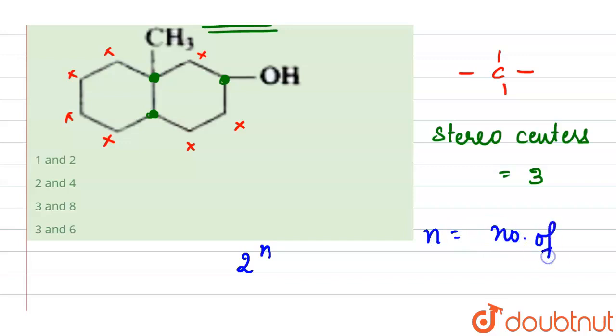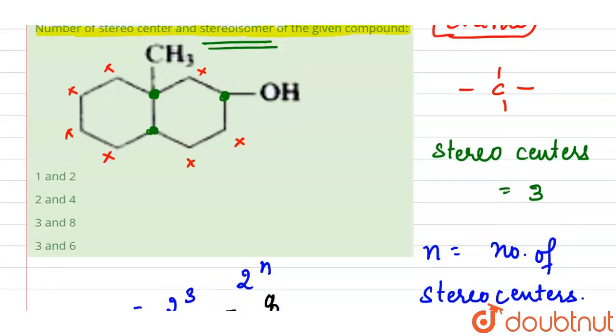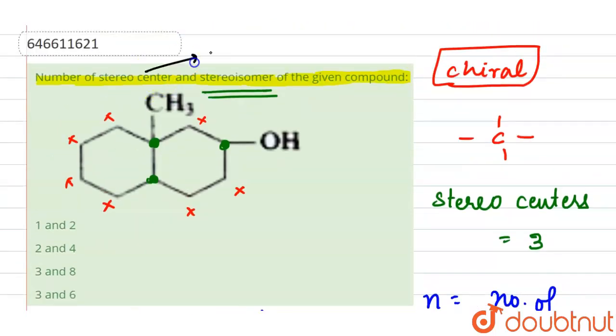That means two to the power three, which is equal to eight. So stereocenters are three and stereoisomers are eight.